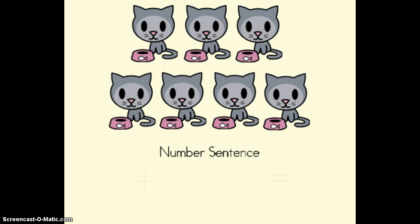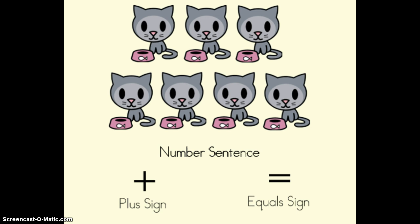Tomorrow we are going to start writing number sentences to match our addition stories. When we write a number sentence we need to use some special symbols you've probably seen before. Here's a plus sign — we use a plus sign to add the groups together. Here's an equal sign — we use the equal sign to show that both sides of the number sentence are the same.